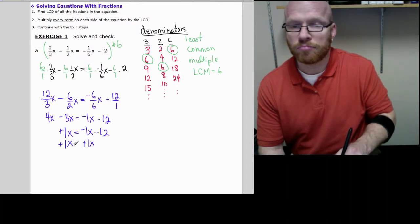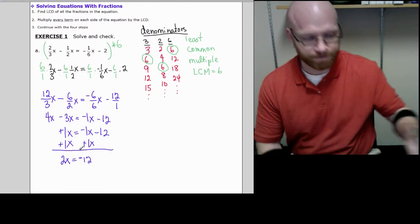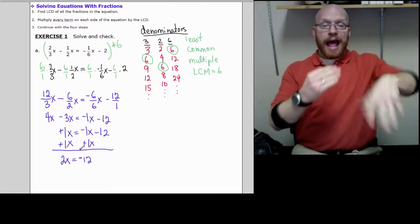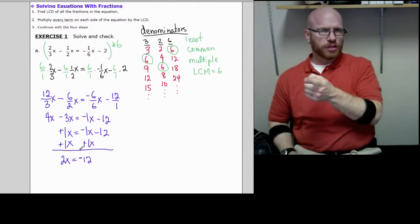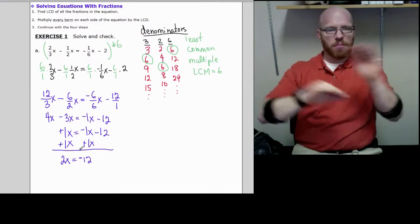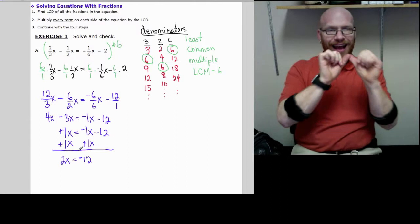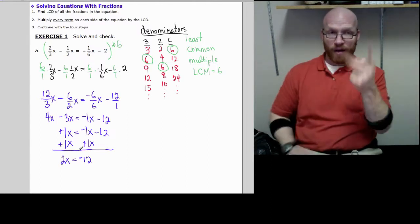I started to add the 1x and decided I need to simplify one side first. After you simplify, then you work on moving or adding, subtracting variable terms or constant terms. Now you can see we have 2x equals negative 12.